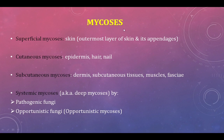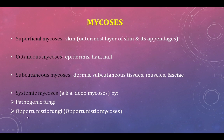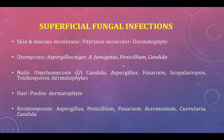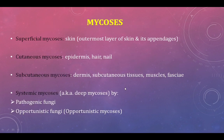Mycoses can be classified as superficial, cutaneous, subcutaneous, or systemic. Superficial mycosis involves only the outermost layer of the skin and its appendages. Cutaneous mycosis goes deeper into the epidermis and involves hair and nails. Subcutaneous mycosis involves the dermis, subcutaneous tissue, muscle, and fascia. Deep or systemic mycosis is caused by pathogenic or opportunistic fungi; when opportunistic fungi cause infection it is called opportunistic mycosis.